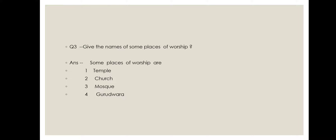Question number 3: Give the names of some places of worship. Some places of worship are: first is temple, second is church, third is mosque, and fourth is gurudwara.